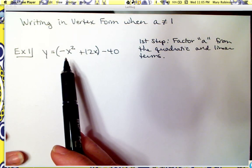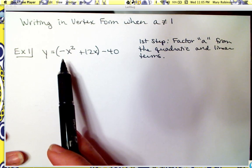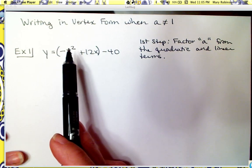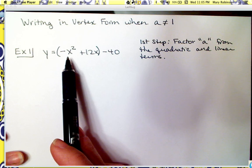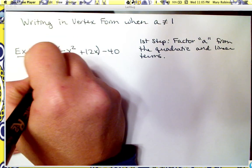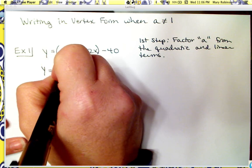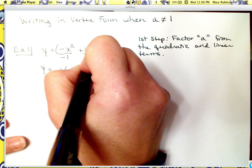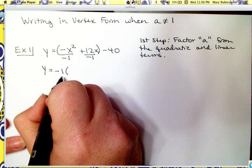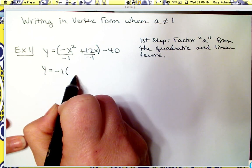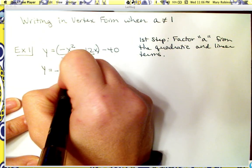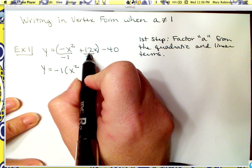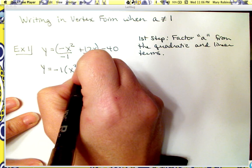The leading coefficient is the coefficient of the term with the highest degree. Our quadratic term has the highest degree, so the leading coefficient here is a negative understood 1, and we need to factor that out. When you factor something out, what's left is the terms divided by that negative 1. Negative 1 times positive x squared gives negative x squared, and positive 12x divided by negative 1 gives negative 12x.